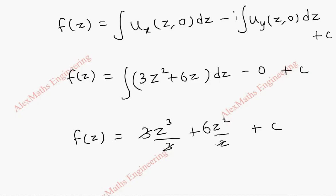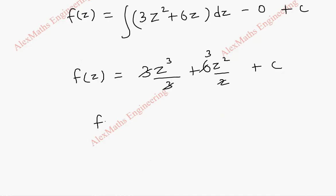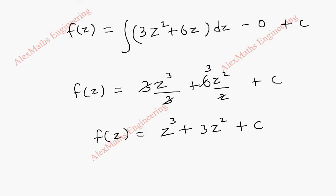We can cancel this and this becomes 3. So finally, f(z) becomes z³ plus 3z² plus c. Thus we got the analytic function f(z).